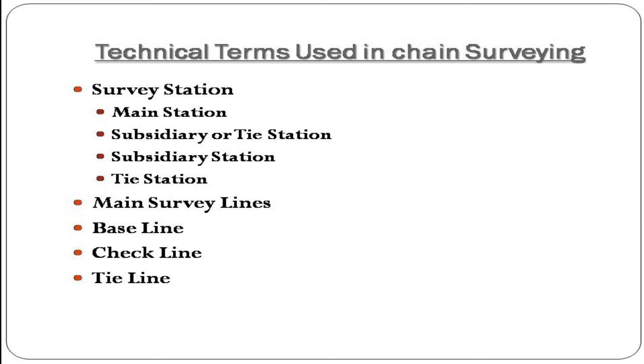Technical terms used in chain surveying: Survey station, main station, subsidiary or tie station, subsidiary station, tie station, main survey lines, baseline, check line, and tie line.